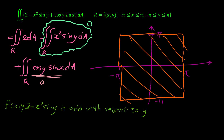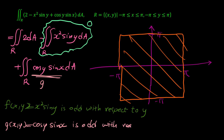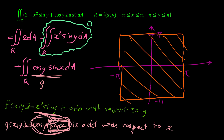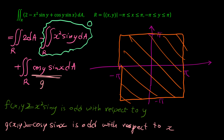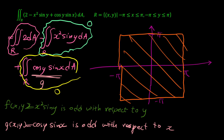For g(x, y) = cos(y)·sin(x): since sin(x) is odd, this function is odd with respect to x. Because the region is symmetric with respect to the y-axis (x = 0), the double integral of cos(y)·sin(x) dA is also zero.